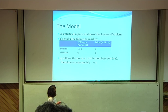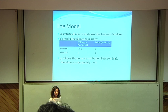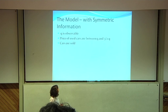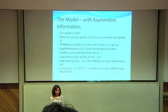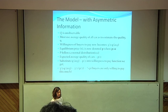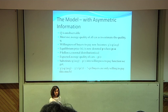The model is given here, where I have a table. I've denoted Q as quality, and Q follows a normal distribution, so the average quality is given as a half. With symmetric information, Q is observed because we know the quality of that car. So the price of used cars will be between Q and 3 over 2Q, and cars can be sold in the market — there will be trade. However, with asymmetric information, we can't observe Q. So we have to use the average quality to estimate the price. The willingness for buyers to pay now becomes 3 over 2 times Q average, and the equilibrium price is now denoted as P, where P is greater than 0. P also follows a normal distribution, which means that the average will be P over 2.